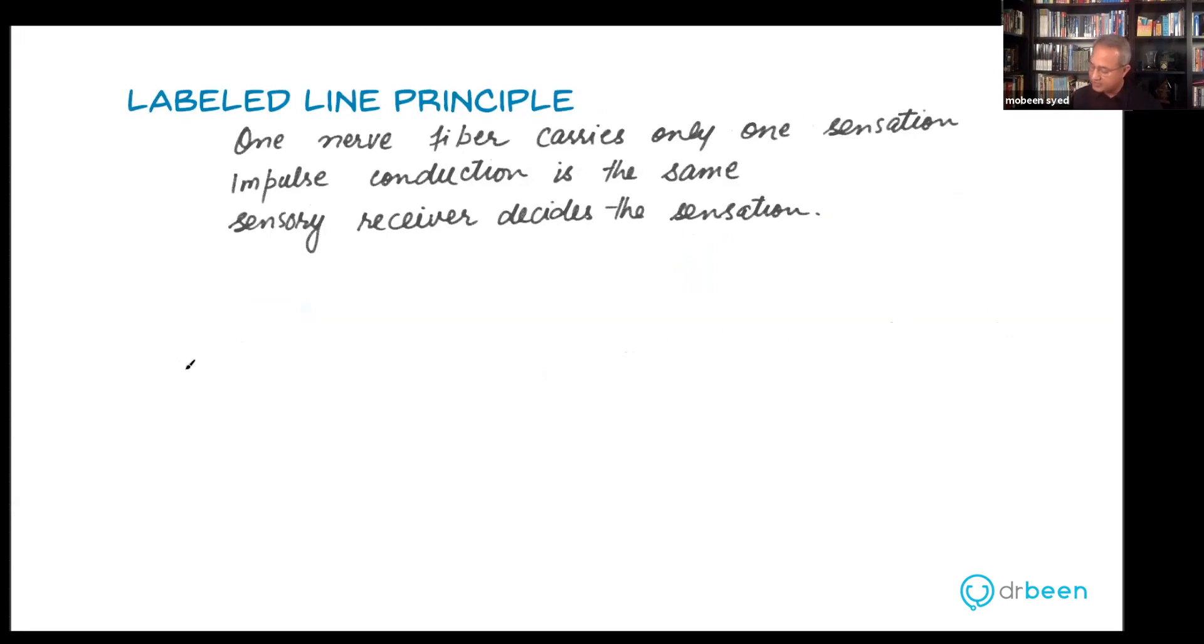Let's say we once again make a Pacinian corpuscle, so get ready to talk about Pacinian corpuscles all day today. Let me take a blue color and I'm going to make a nerve ending from here. So let's say this is the nerve, and this one is the receptor.